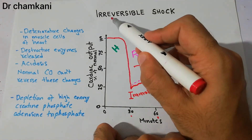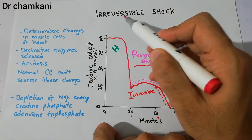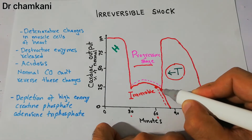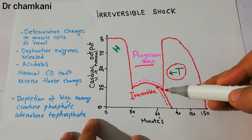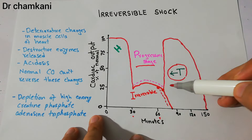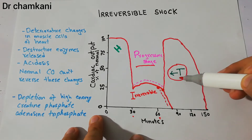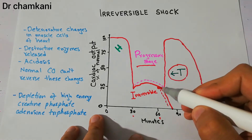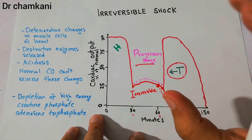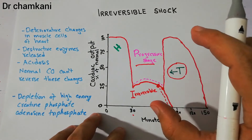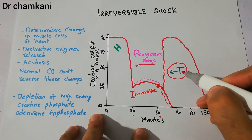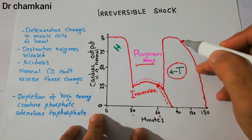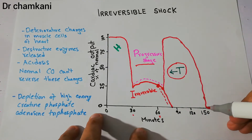Once a patient has entered the irreversible stage of shock, even if treatment is provided it may temporarily help to increase the cardiac output. However, because the irreversible point has been crossed, deteriorative changes have occurred so much in the body that the patient is not able to recover. Even with treatment the cardiac output may briefly return toward normal, but then it falls once again to zero.